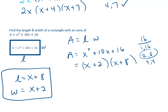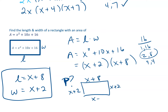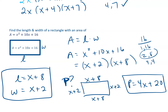Now what if they asked about the perimeter? Perimeter is the distance all the way around, so label your sides: x plus 2, x plus 8, x plus 2, and x plus 8. Adding all those sides: x plus x plus x plus x is 4x, plus 2 plus 8 plus 2 plus 8 is 20. So the perimeter would be 4x plus 20. I'm going to stop this video here, but I'll make another video with more practice problems on factoring, so if you need more help, there will be a second video.